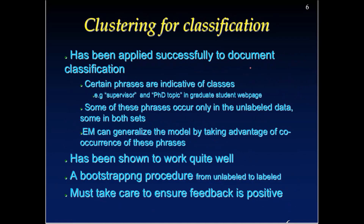These steps have been successfully applied to document classification. Document classification is a typical problem which can be separately solved using supervised and unsupervised learning, but combining both has better accuracy. For example, keywords like a supervisor or PhD topic indicate a faculty web page. But labeling cannot be done for all pages — many times the data is unlabeled. Use supervised algorithms to find the label of each page, then include the unlabeled data with labeled data and continue retraining until better accuracy or convergence is achieved.